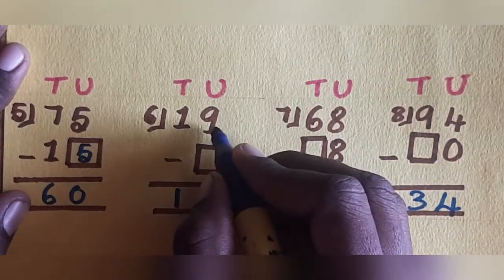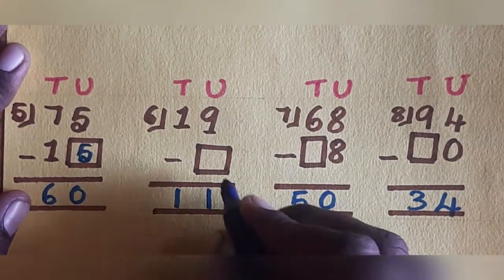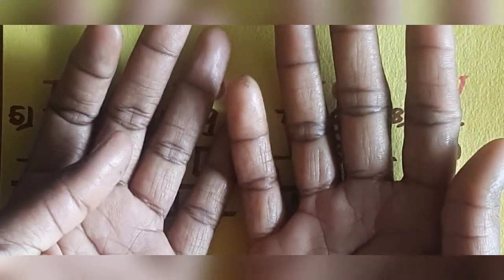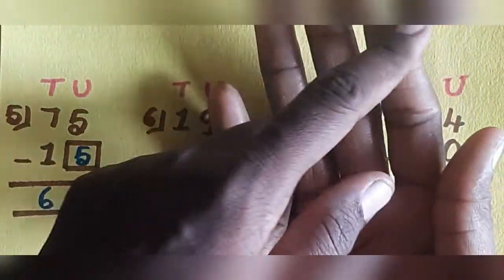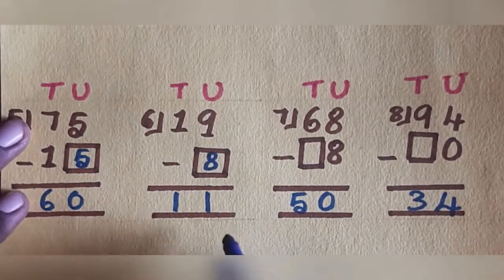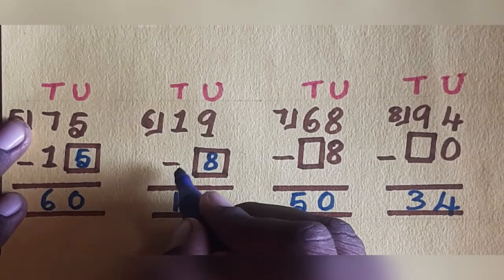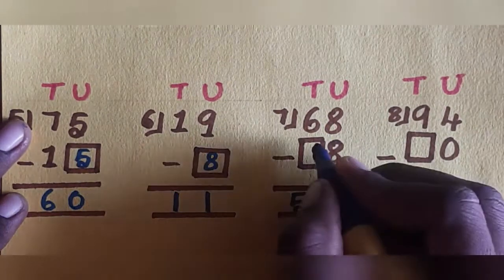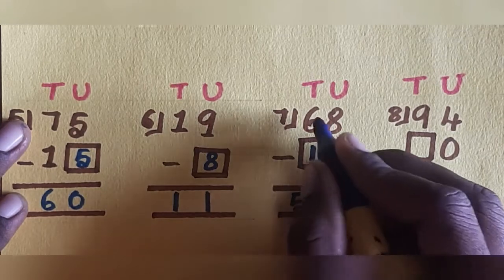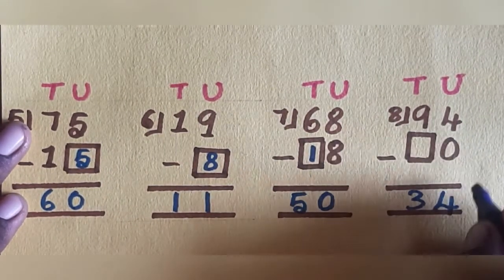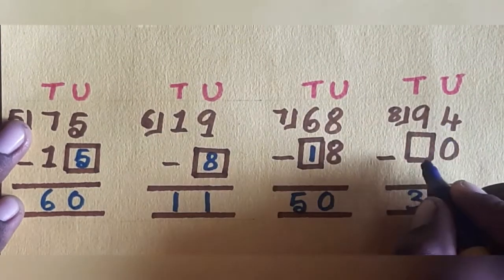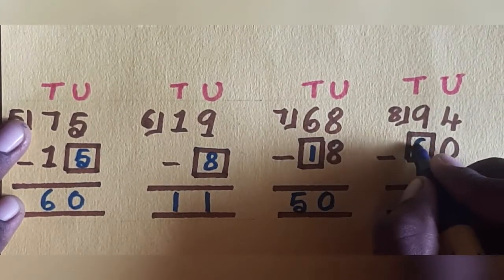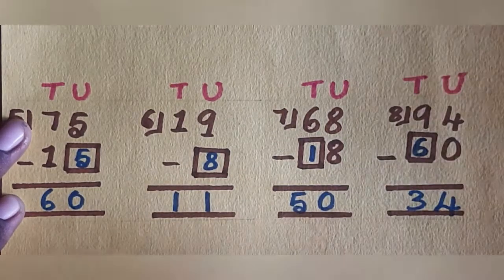Next: 7 minus 6. Then 9 dash, answer is 1. So 9 minus 8 equals 1. Next: 8 minus 8 equals 0. Then 6 — how many numbers? Answer is 5. So 6 minus 1 equals 5. Next: 4 minus 0 equals 4. Then 9 dash, answer is 3. So 9 minus 6, balance is 3.